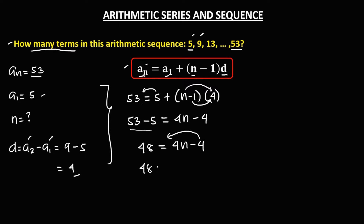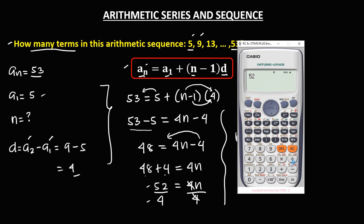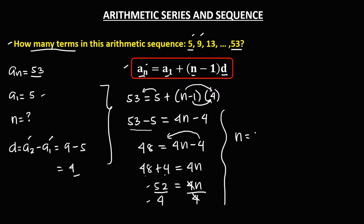Transpose the negative 4: 48 plus 4 equals 4n, so 52 equals 4n. Divide both sides by 4, so n equals 52 divided by 4, which equals 13. This sequence has 13 terms.